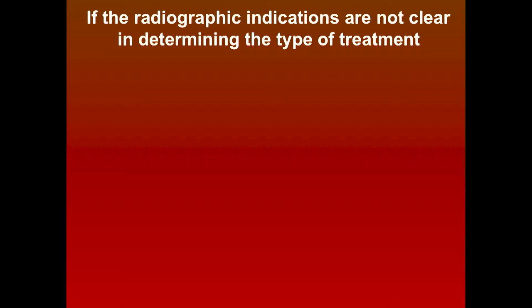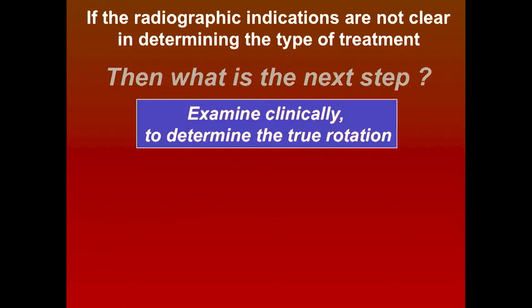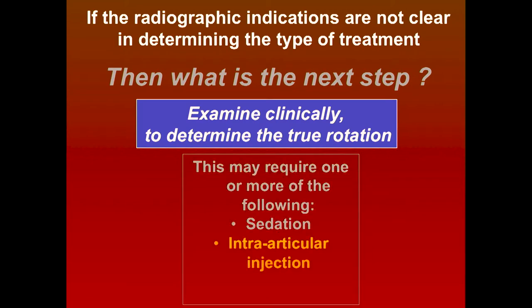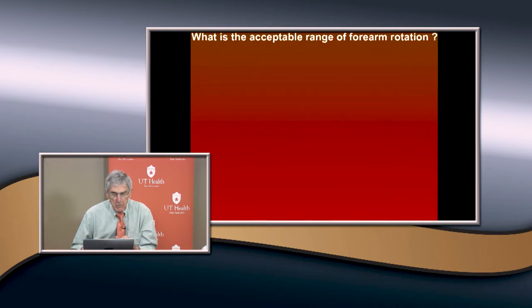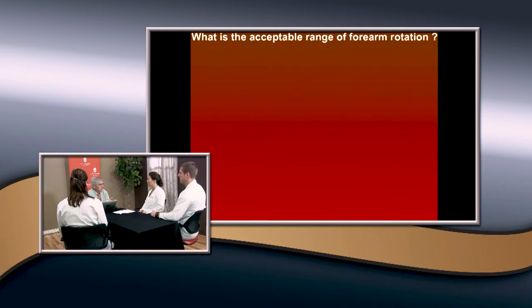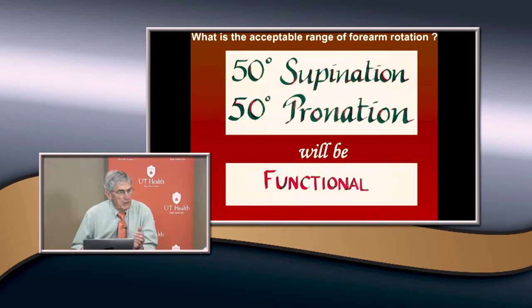If the radiological indications are not really clear in the emergency room, you can do an arthrogram. You want to examine them clinically and determine their true forearm rotation. You can do this under sedation, with an intra-articular injection - aspirate the hematoma and put in a little local anesthesia - or often it's best to do general anesthesia because you may need to be more aggressive in treatment. The acceptable limit of forearm rotation is about 50 degrees of supination and pronation for functional use.